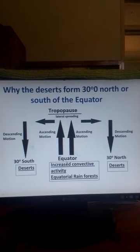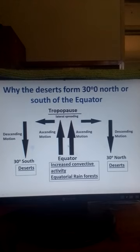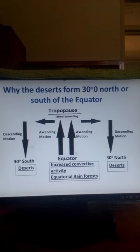At the equator we have hot air which rises. The air is heated because we have maximum heating through insolation, so the air is heated and rises. As it rises it cools and condenses to form a lot of precipitation in the equatorial regions. That's why we have equatorial rainforests like the Amazon and the Congo, because of increased convective activity and increased precipitation in those regions.